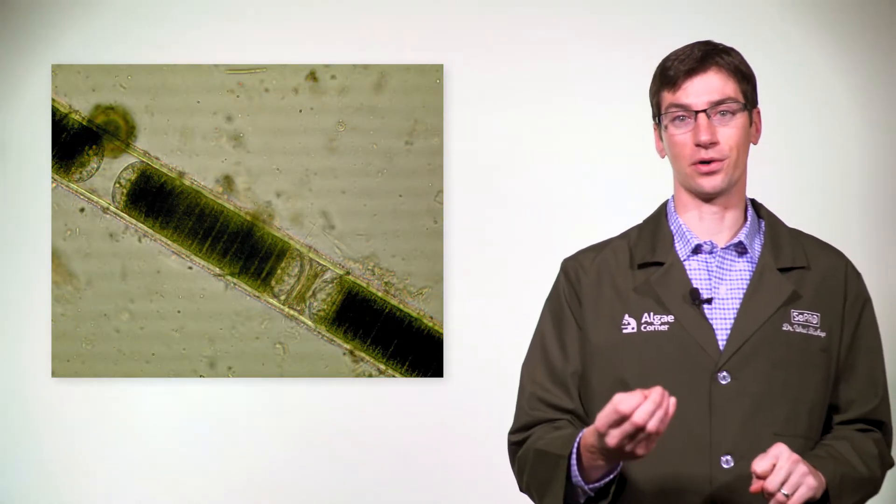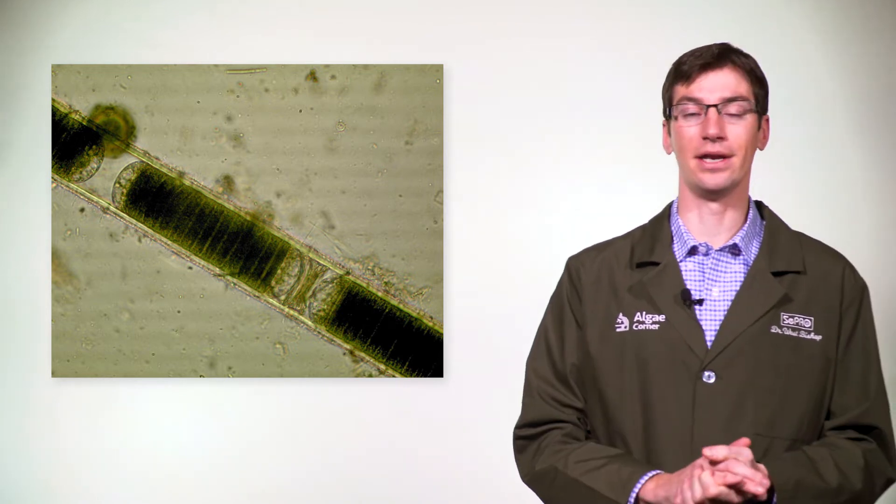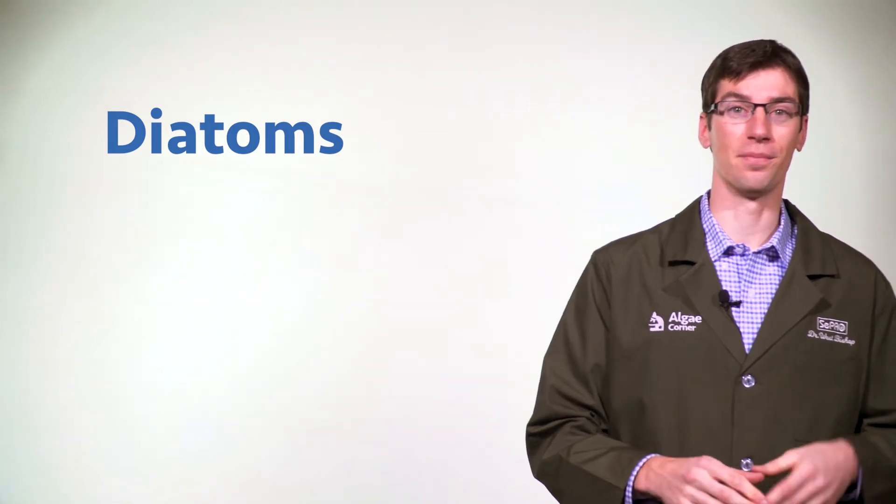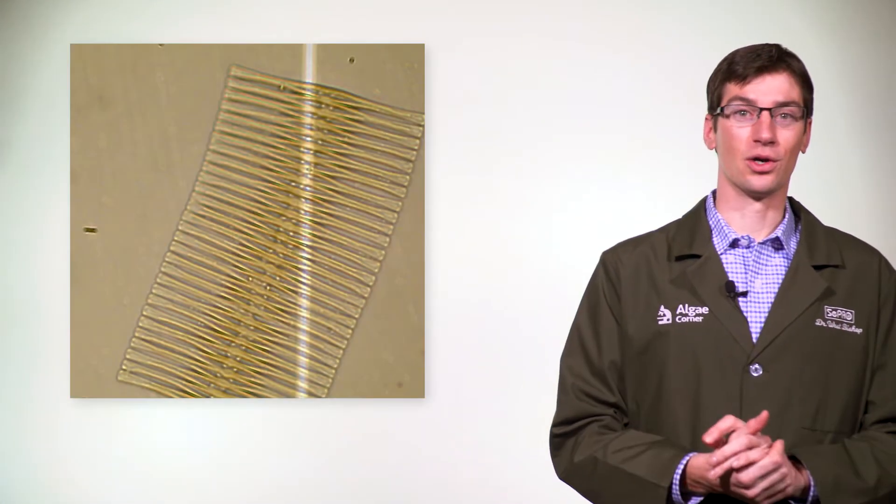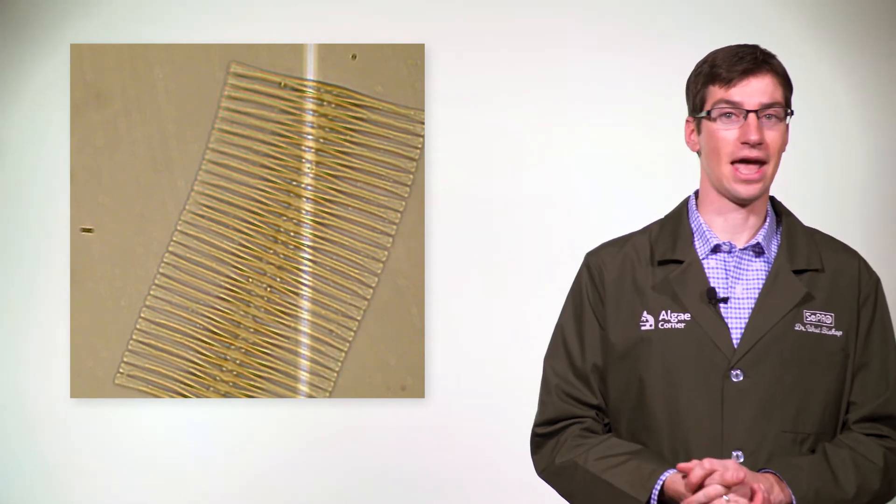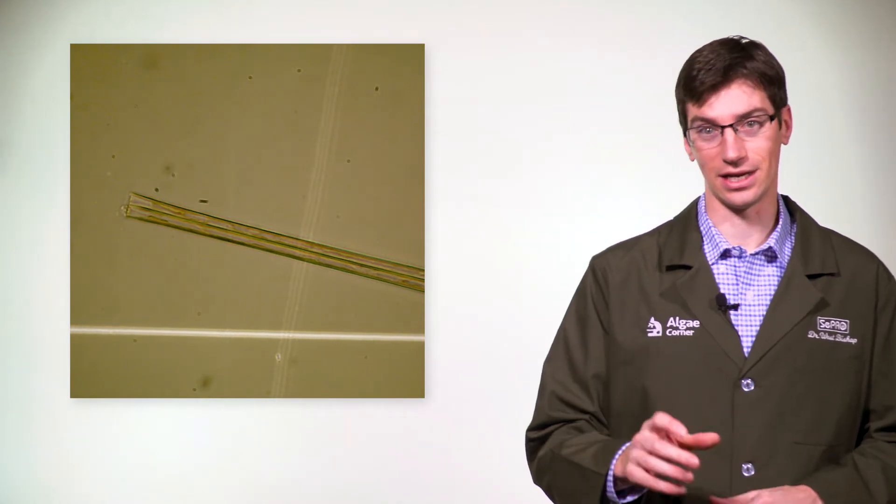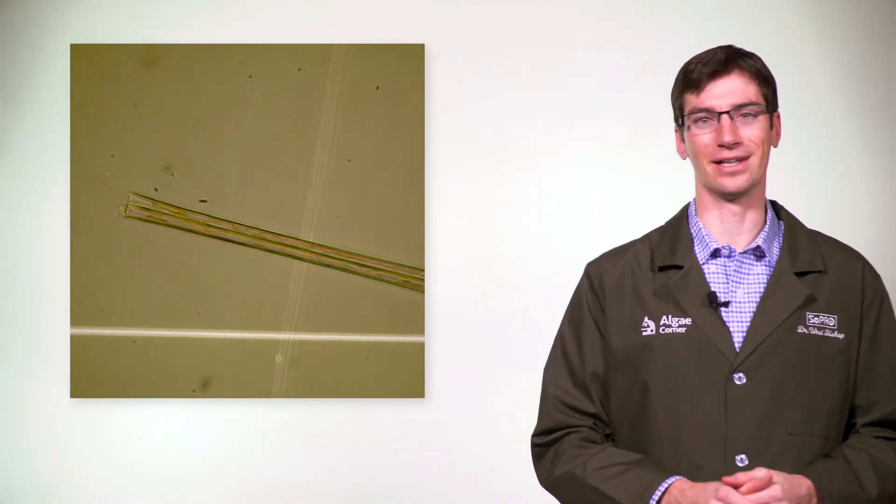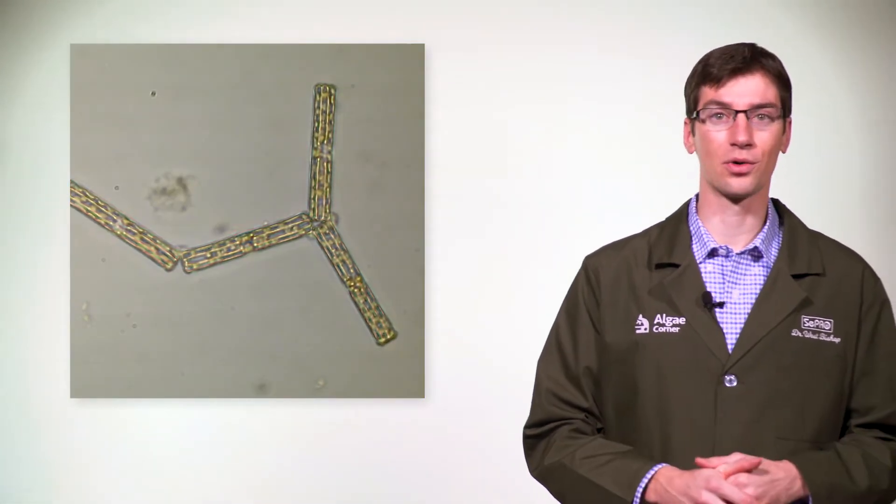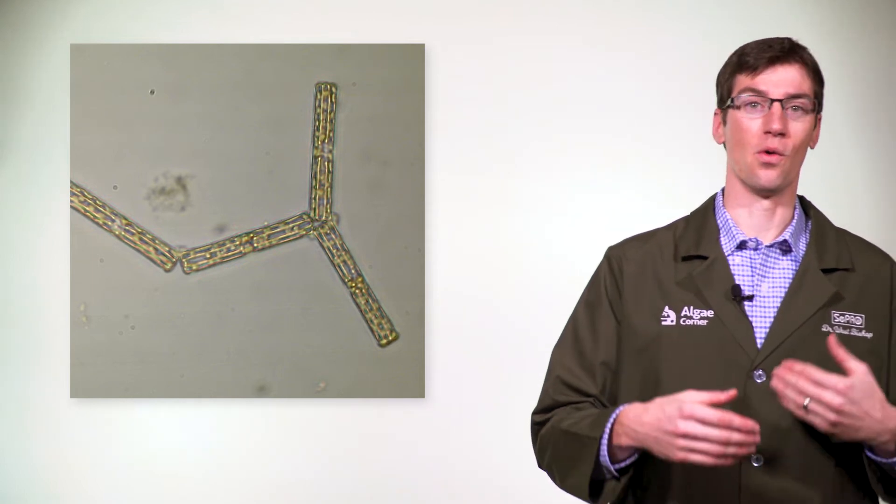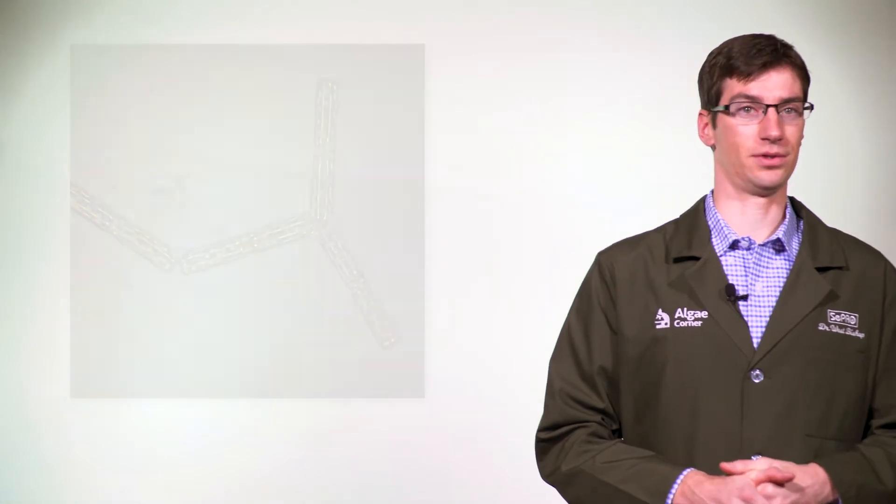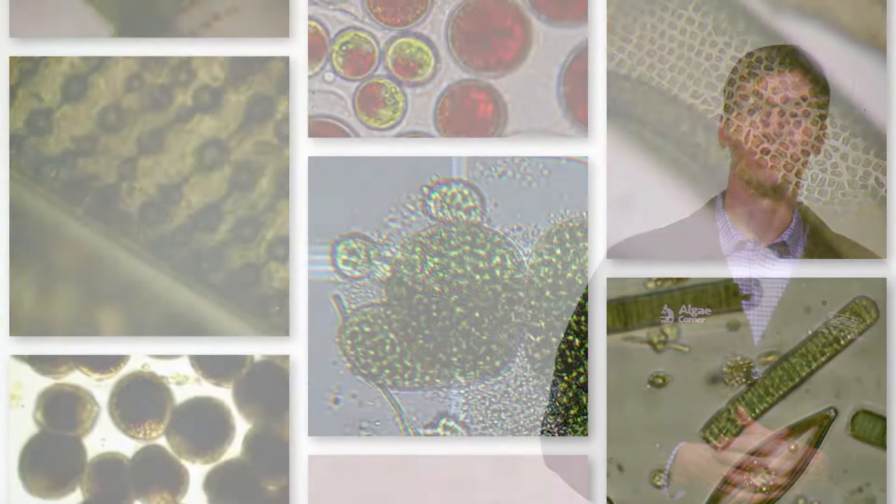Another group of algae are diatoms. These are really neat organisms—they often appear goldish or gray to yellow-green in color, and that's because they have a pigment called fucoxanthin. Diatoms interestingly often look like little pieces of glass because they have silica in their cell wall. They're very common and may cause your water to look turbid or brown in color, but not always as bad as the other types.